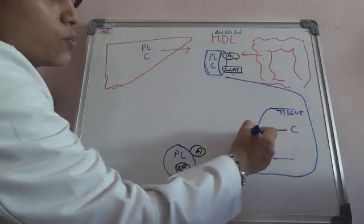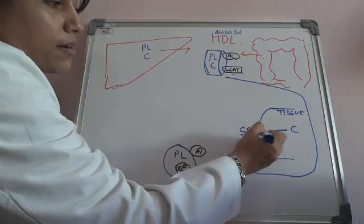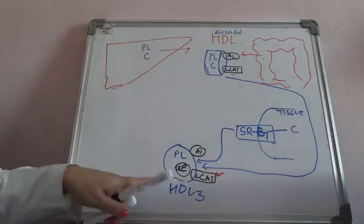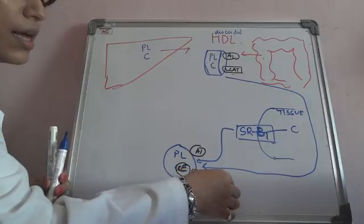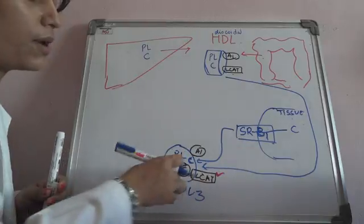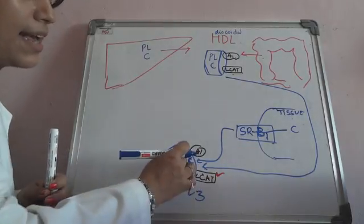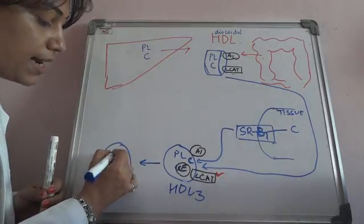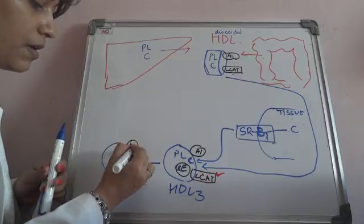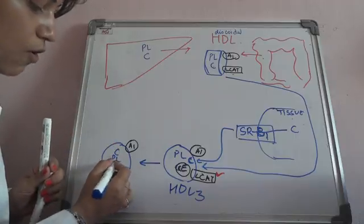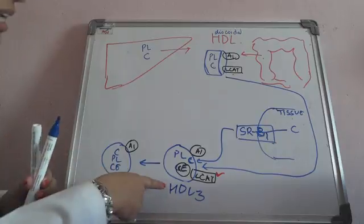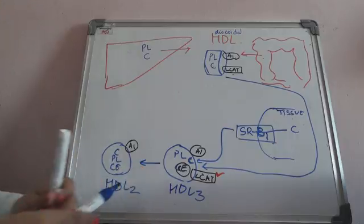Scavenger receptor B1 will give some cholesterol to HDL3. So cholesterol has come from tissue via scavenger receptor B1 to HDL3. Now I have this LCAT and I have cholesterol, so what will it again do? It will again esterify to form cholesterol ester. And now I have only ApoA1 with me — LCAT is not there. Whatever little cholesterol is present is mostly esterified cholesterol, so it has become less dense and spherical. And this is called as HDL2. So basically HDL3 formed HDL2 because of the remaining cholesterol that was esterified by LCAT.